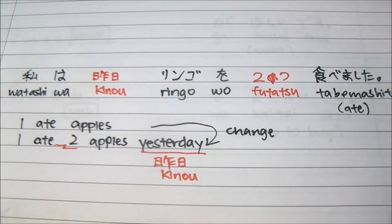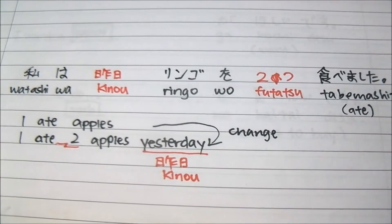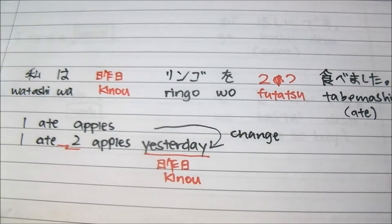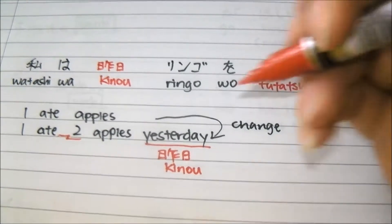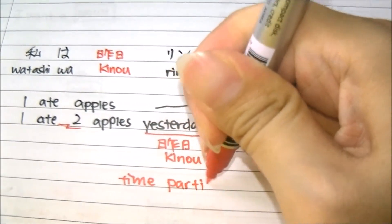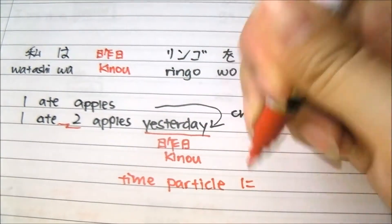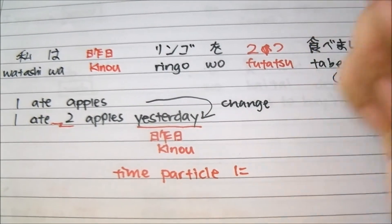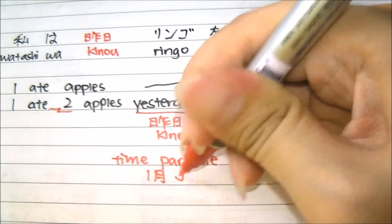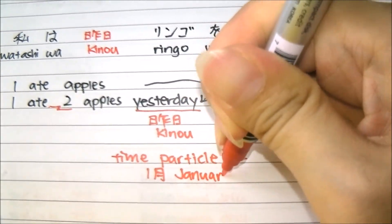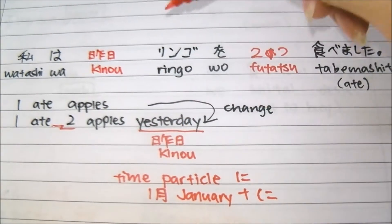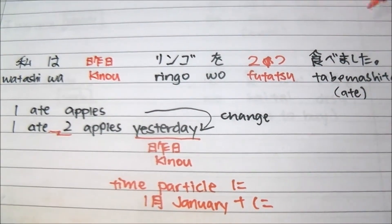There's something you need to take note of. Only when there are numbers do you actually need to add a particle. Remember, there is a time particle called 'ni'. This is used when it's very specific. For example, 'ichi gatsu' means January — you add a 'ni'. So: 'Watashi wa ichi gatsu ni ringo wo futatsu tabemashita.'